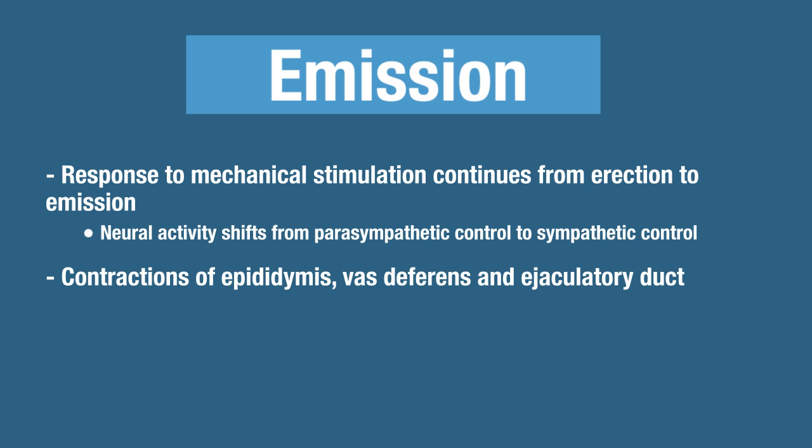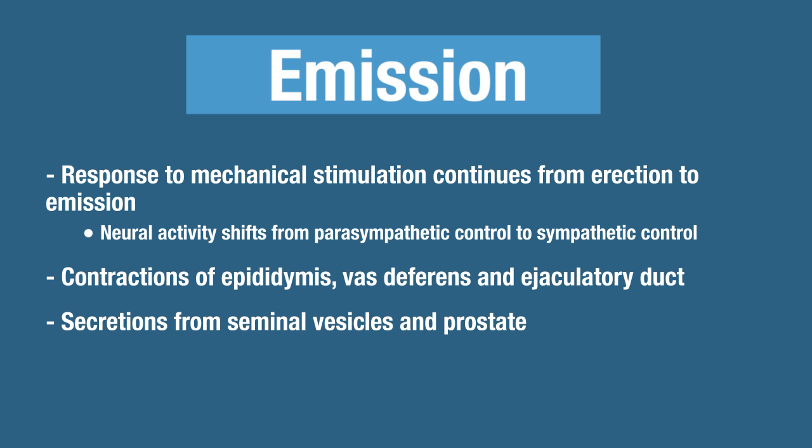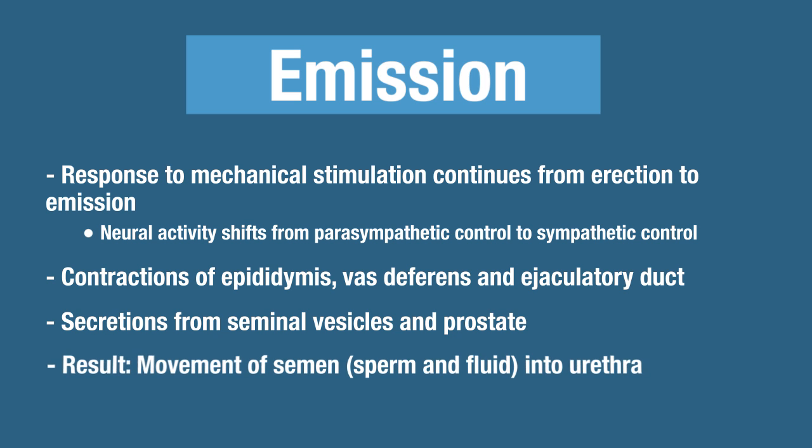The sympathetic nervous system also causes secretions from the seminal vesicles and the prostate. Think back to the previous lecture about what those secretions are. The end result of emission is moving semen — semen being a combination of sperm plus fluid — into the urethra. Emission is the movement of semen into the urethra, driven by sympathetic contractions of the epididymis, vas deferens, and ejaculatory duct, plus secretions from the seminal vesicles and prostate.